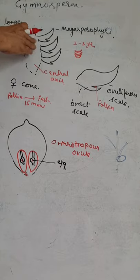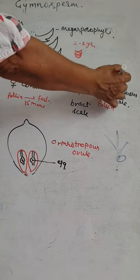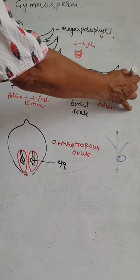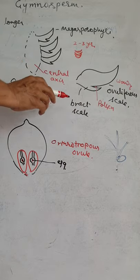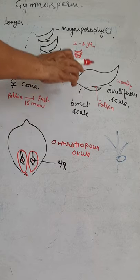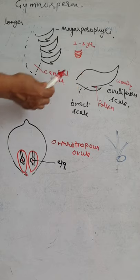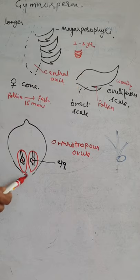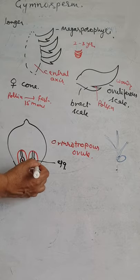The ovuliferous scales are large, woody, and brown in colour. The smaller ones are the bract scales. Pollen grains come here and pollination is done. Each megasporophyll contains 2 megasporangia.